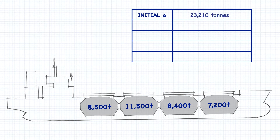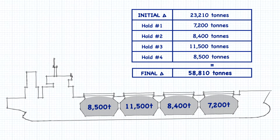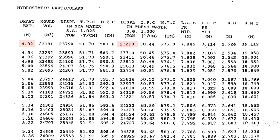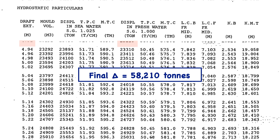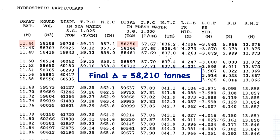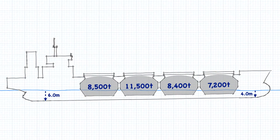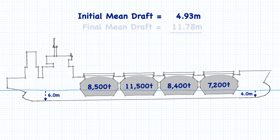The displacement for our true mean draft is 23,210 tons. If we take our initial displacement and add to it all of our cargo amounts, we arrive at a final displacement of 58,810 tons. Now we can go back into our hydrostatic tables using our displacement after loading in order to get the values we need. We can see that after loading our new mean draft is 11.44 meters. This means that if we started off at a true mean draft of 4.93 meters and ended up at a mean draft of 11.78 meters after loading our cargo, our ship sank bodily by 6.85 meters.